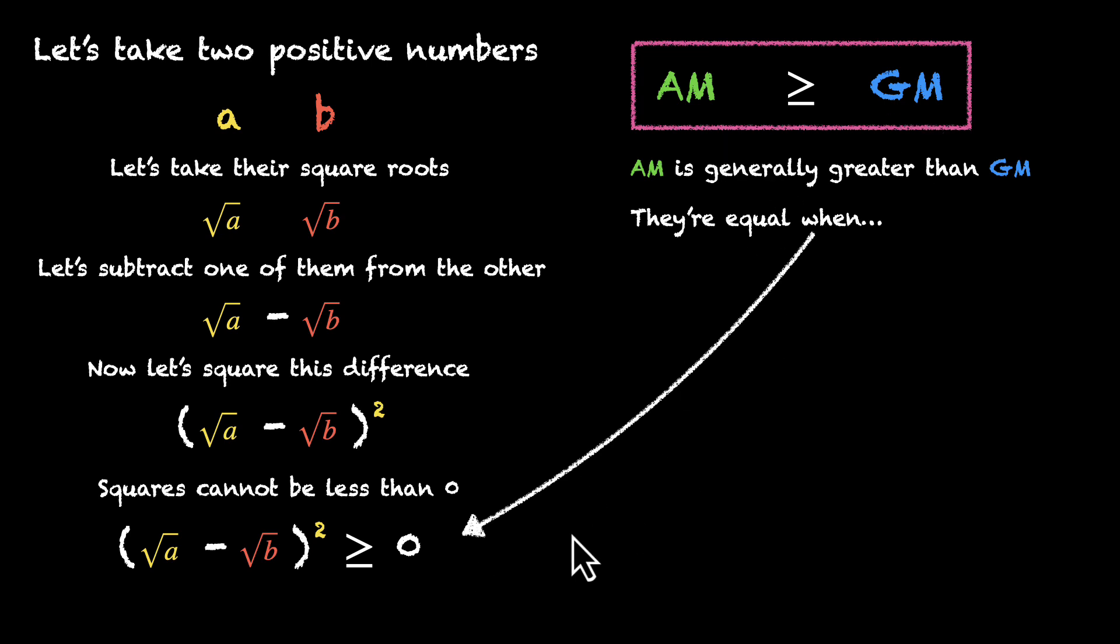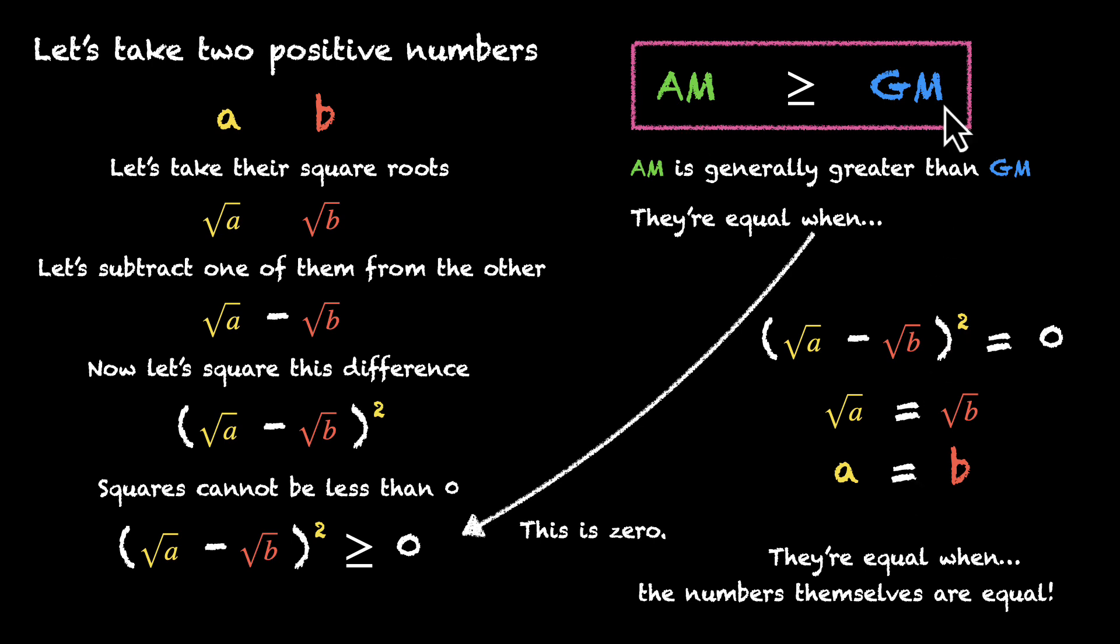AM will equal GM when this becomes zero. And when is this zero? This is zero when we are squaring a zero, which means this difference is zero, which means √a equals √b, which means the two numbers are equal. So AM equals GM when both numbers are equal themselves. And whenever they're not equal, AM will always be greater than GM.